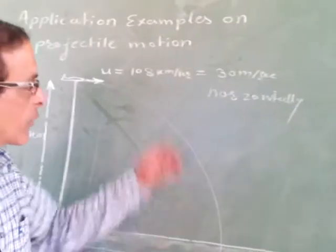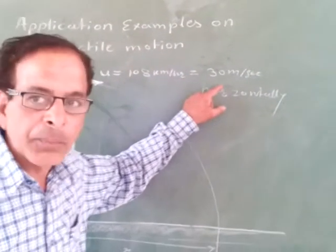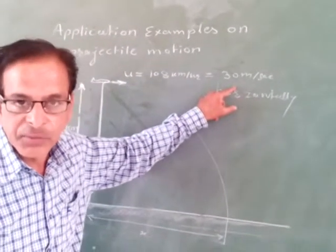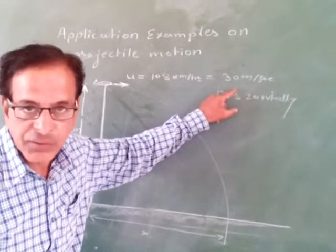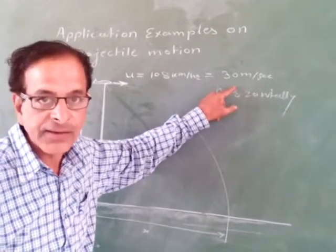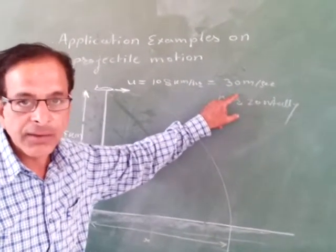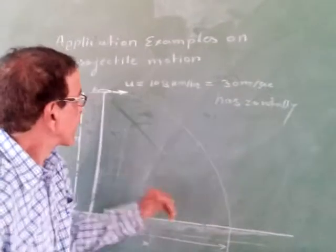Why are we converting to meters per second? Because the acceleration due to gravity g is in meters per second squared, that is why we need meters per second.